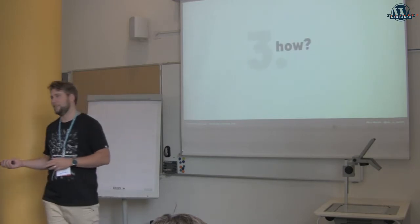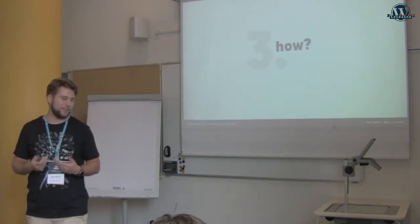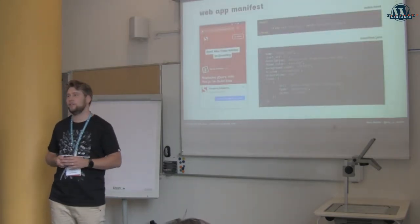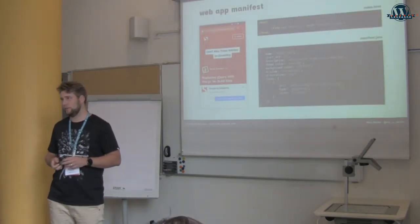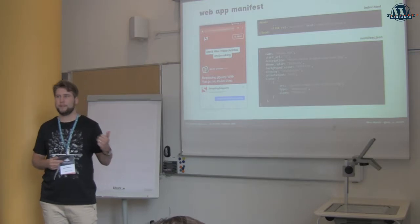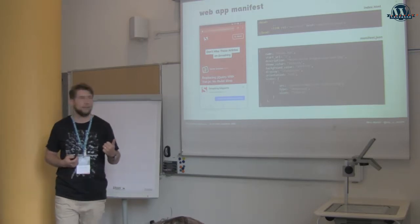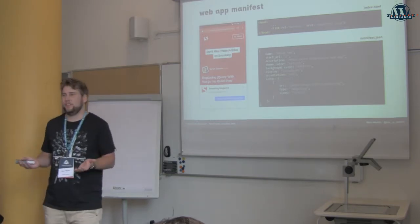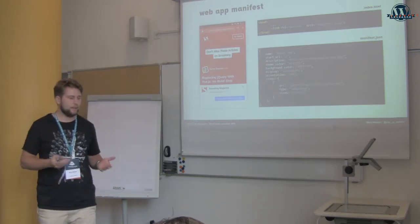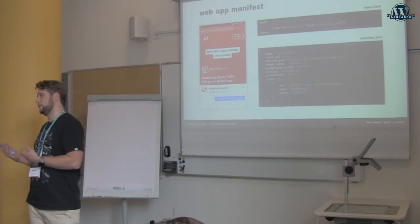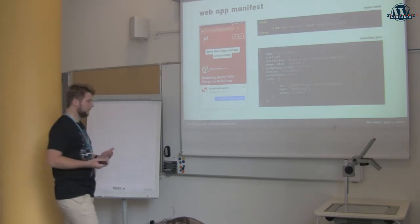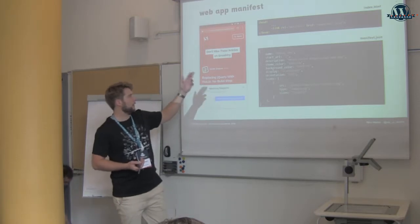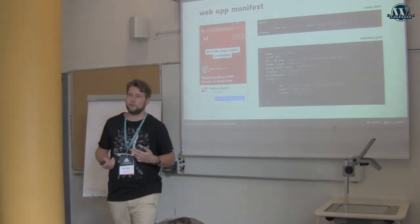The biggest part of my talk: the how — how do we achieve that? I was talking about new browser features, and one feature is the web app manifest. It's pretty basic — it's just a JSON file that contains some information about our website. We have a name, description, some colors. We have a display mode, so we can decide whether it should open in full screen, or still show the notification bar, or use the browser bar as well.